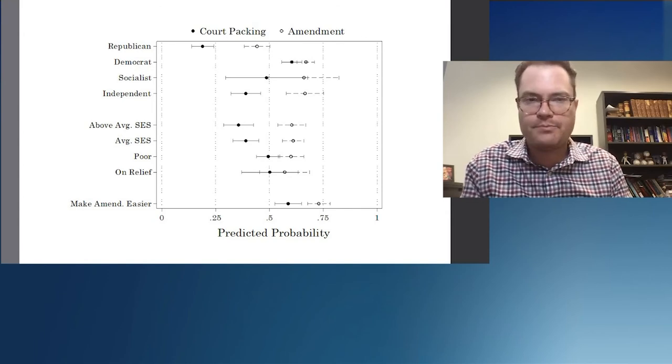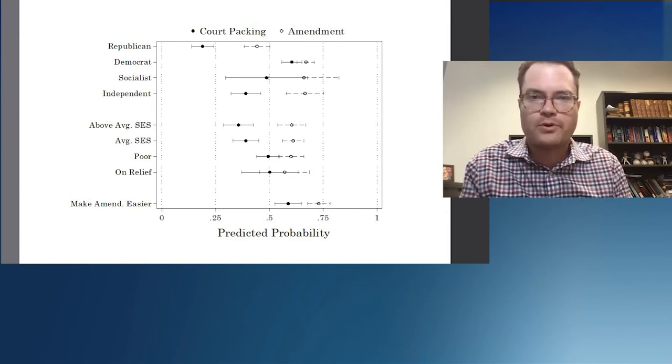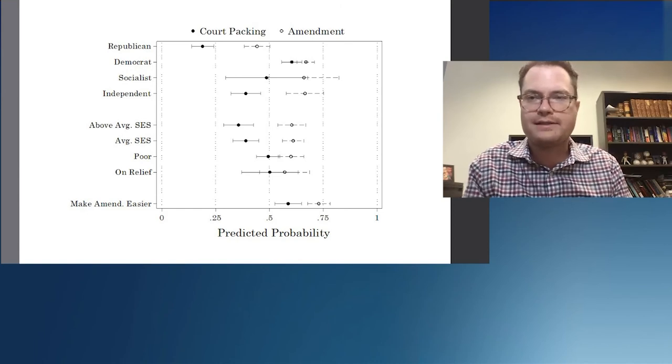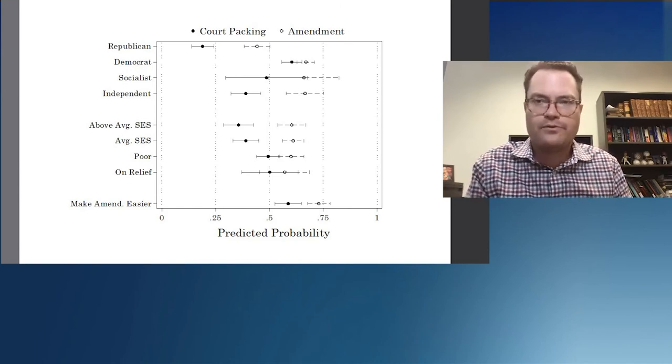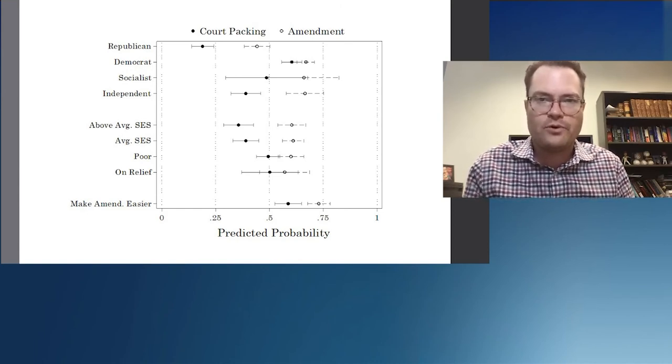The solid dot is the percentage of people who support court packing. The hollow one is the percentage of people who support a constitutional amendment to overturn conservative Supreme Court cases.